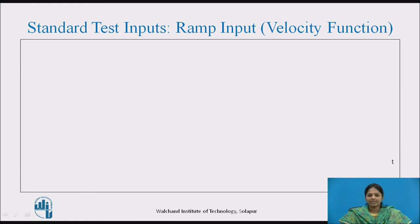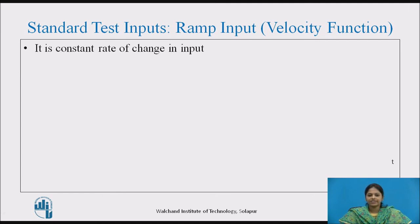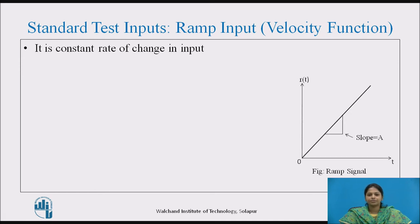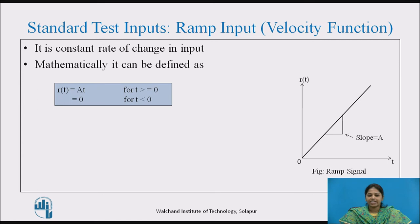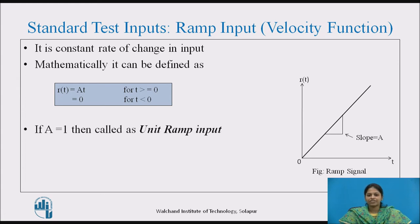The next standard test input is the ramp input, which is a velocity function. It represents a constant rate of change in input, that is, the gradual application of input, as shown in the figure. Mathematically, it is defined as R(t) = At for t ≥ 0, and R(t) = 0 for t < 0. If A = 1, it is called the unit ramp input. The Laplace transform of this input is A/s².